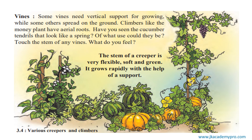The stems of such plants either creep or they climb. Therefore, they are called creepers or climbers, and the stems of these plants are very soft. They take the support of other plants or a stick or anything like that, so they are called vines. Some vines need vertical support for growing — that is, a standing support — while others spread on the ground. Those that spread above the ground are called climbers, whereas stems that creep on the ground belong to plants called creepers.